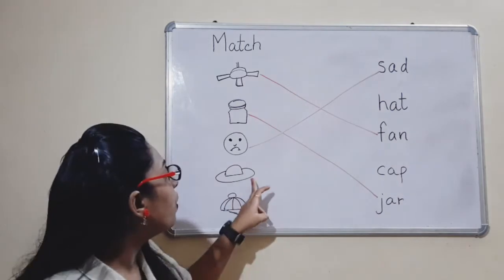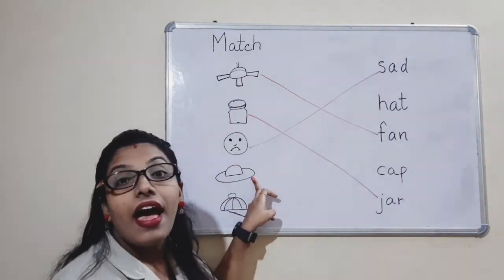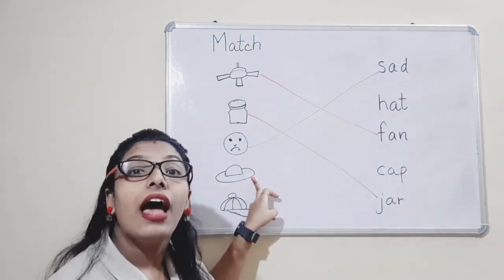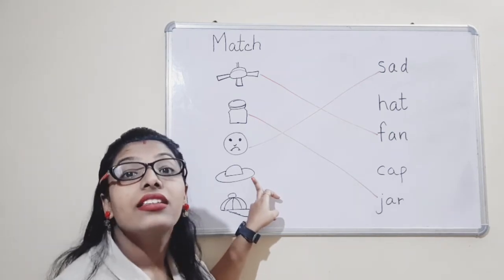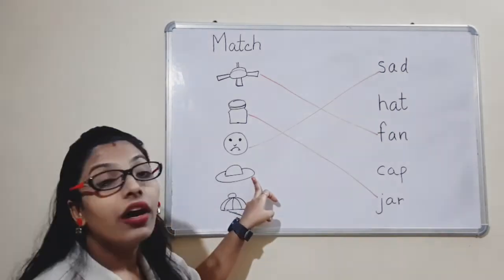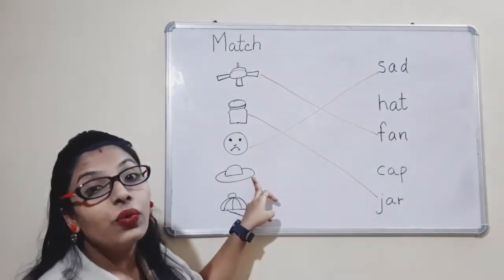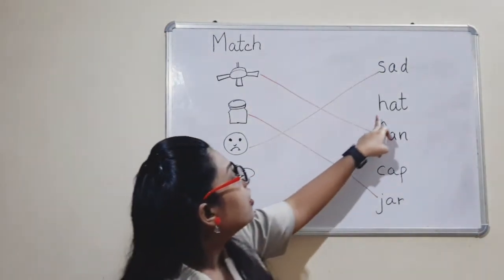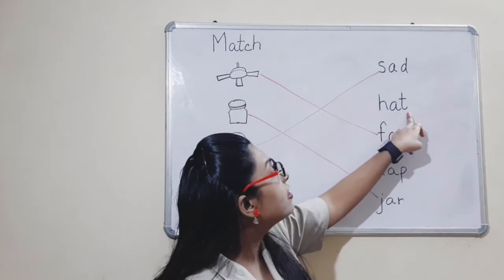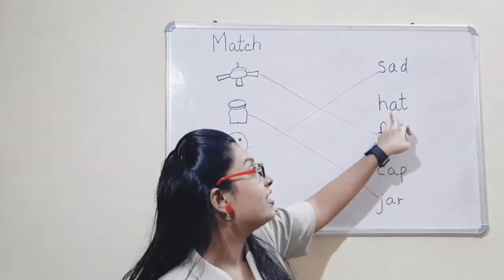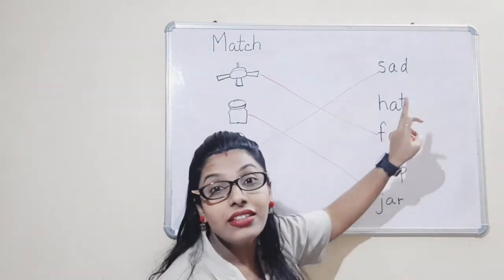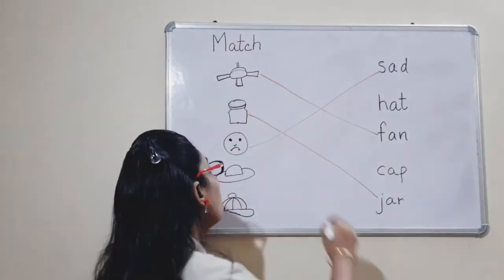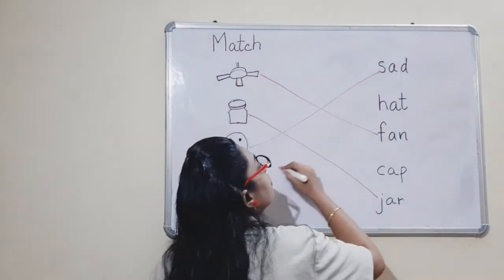What is this? Hat — H-A-T. Hat. H is the sound, so what will be the first letter? H. So, is this H-A-T, hat? Yes. You can see H here — H-A-T. So match this.